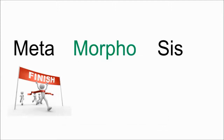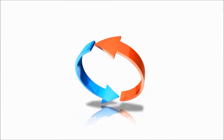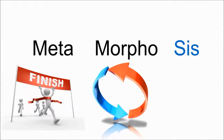The next part of the word metamorphosis is 'morpho.' In science, 'morpho' means change. Through metamorphosis, a caterpillar changes into a butterfly — it turns into a completely different kind of insect. The last part of the word is 'sis,' and 'sis' means a process.